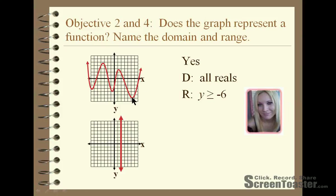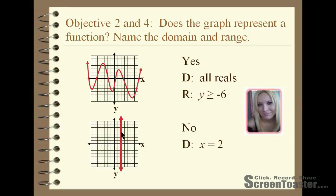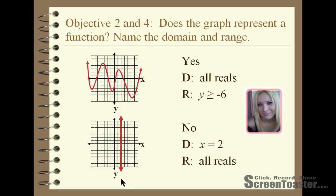The last example would not pass the vertical line test, because it is a vertical line. Placing a vertical line over it would make it cross at every point. The domain is x equals 2, because x is always 2 on this vertical line — you don't go to the left, and you don't go to the right. The range would be all real numbers, because there are no restrictions on the y values the graph takes on — it goes up and down with no restrictions.